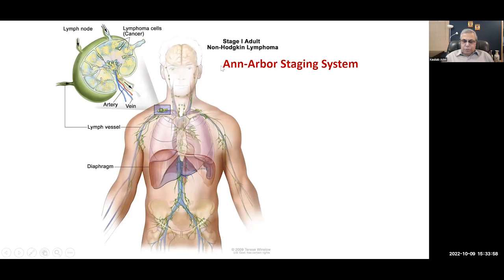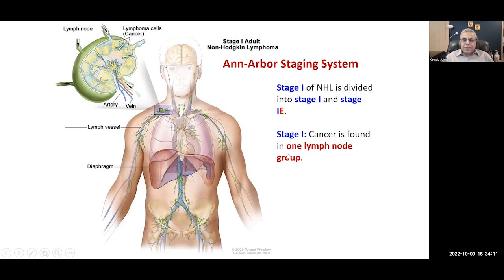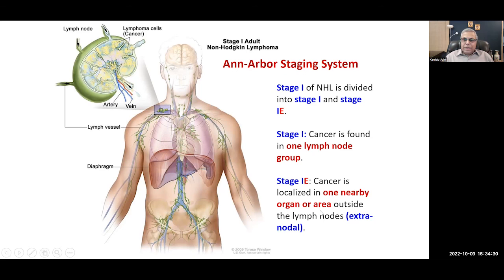In stage one, NHL is found in one lymph node group — for example, supraclavicular. Stage one E means cancer is in one nearby area or organ, meaning it has extended beyond the lymph node capsule involving adjacent structures, known as extranodal spread.